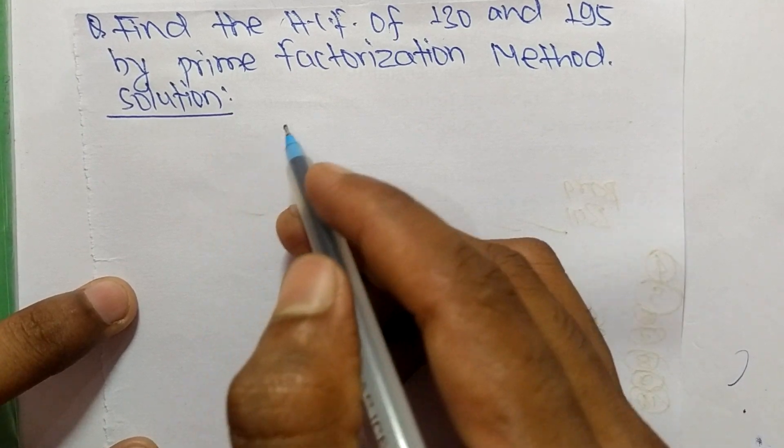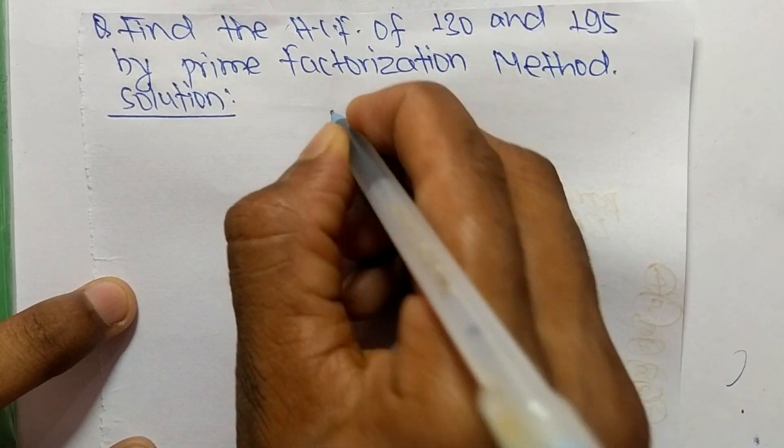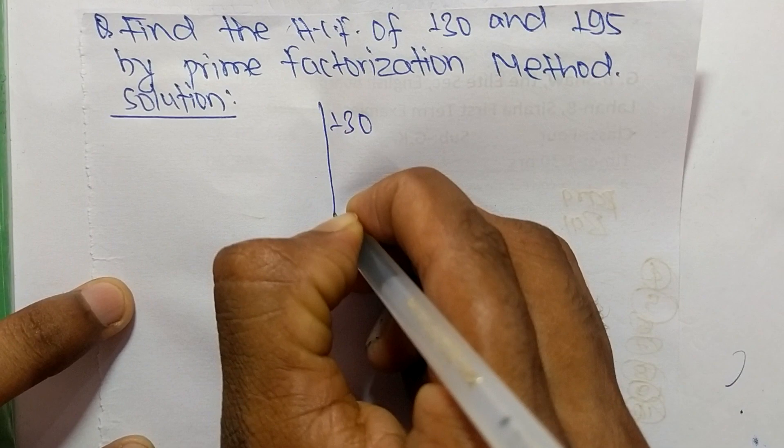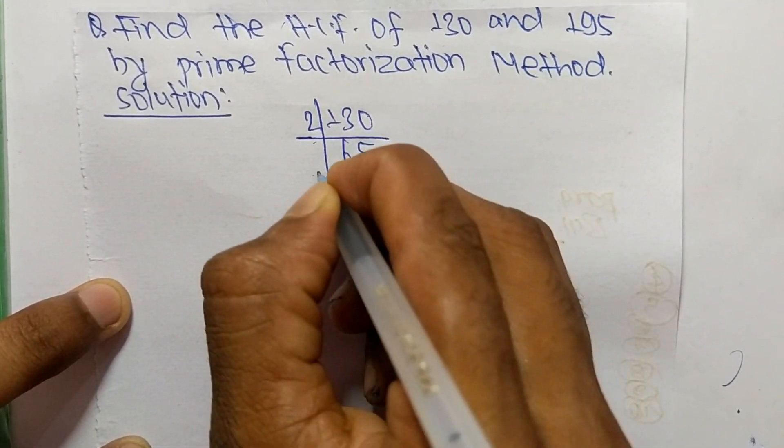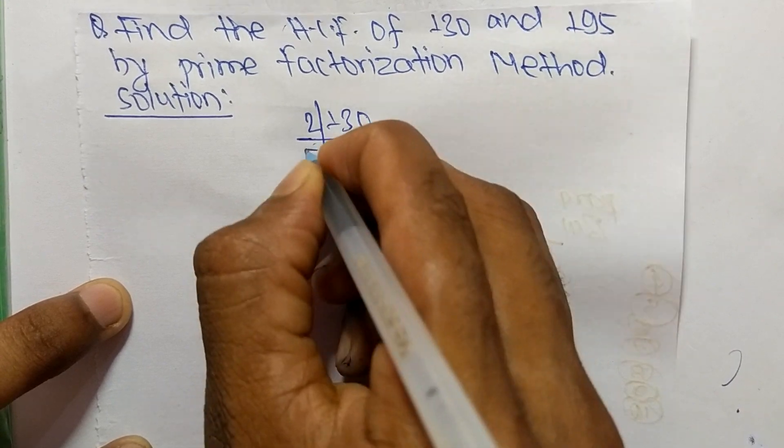First, we find out the prime factors of 130. So it is 2 times 65 equals 130.